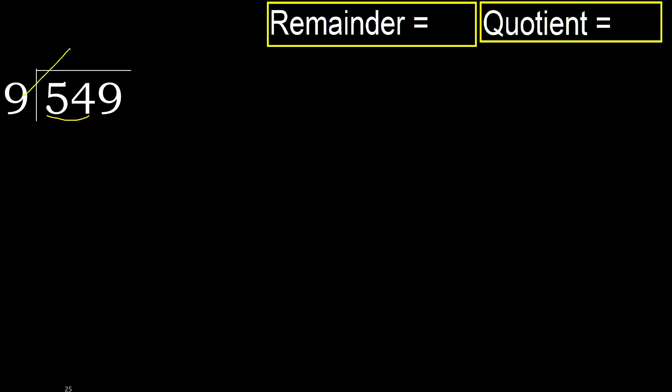9 — multiply by which number is nearest to 54, but not greater. Multiply by 7: 63, it's greater. Multiply by 6: 54, it's not greater. Okay.